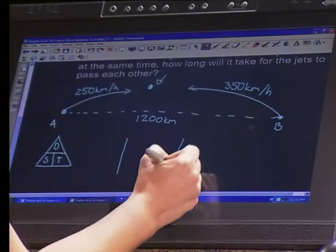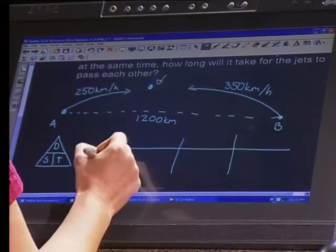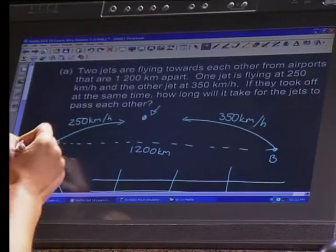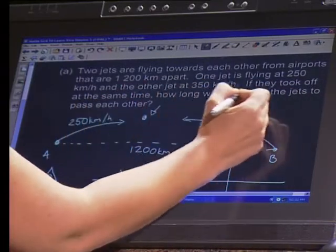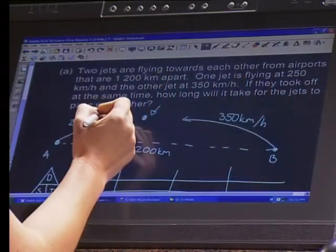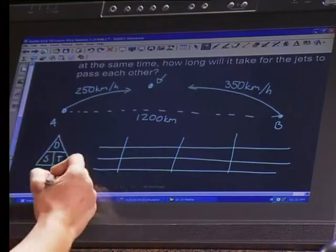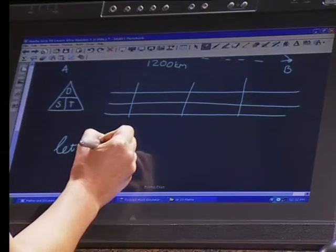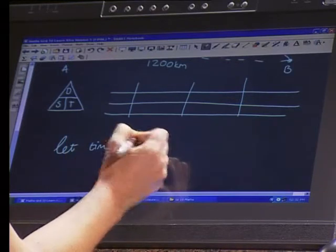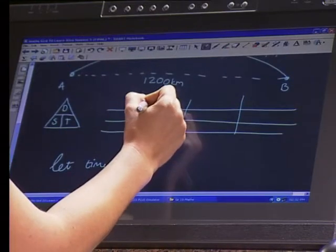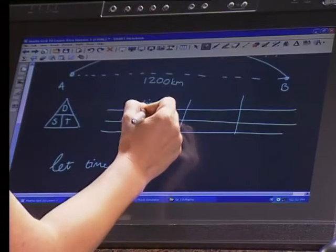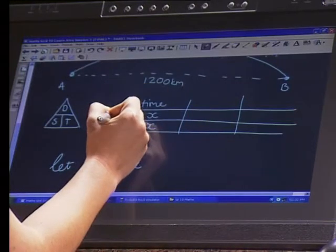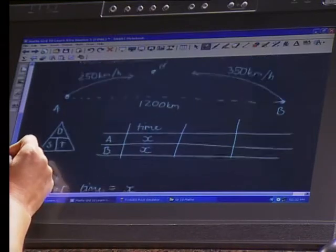Next, let's draw the table. If they took off at the same time, how long will it take for the jets to pass each other? What's going to be our x? Let time equal x. Now they're going to take the same amount of time to travel until the point that they pass each other. We're going to call the one plane, plane A and the other plane, plane B.